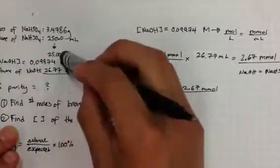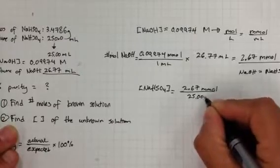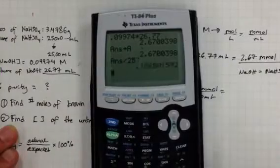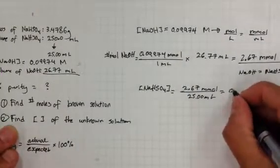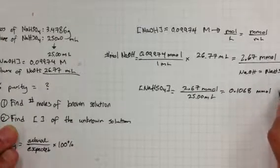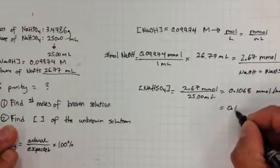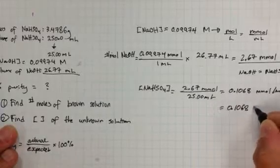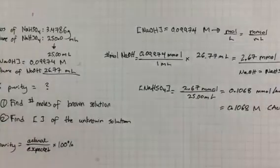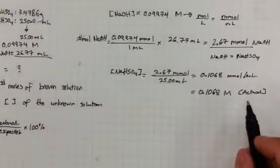For step two — finding the concentration of sodium hydrosulfate — I divide the number of moles, 2.67 millimoles, by the volume of the sodium hydrosulfate sample, which is 25 mL. This gives 0.1068 millimoles per mL, which equals 0.1068 M. This is the actual concentration found experimentally.